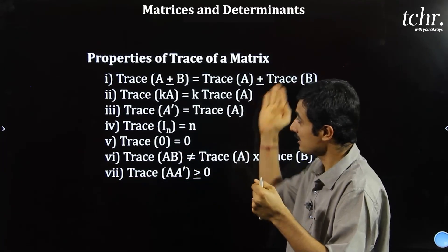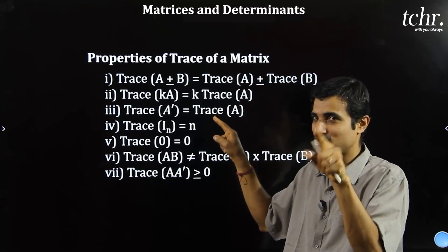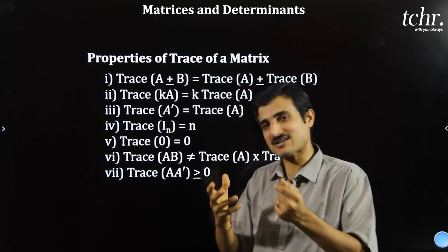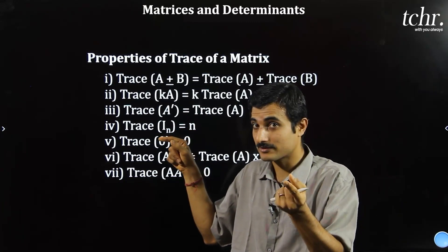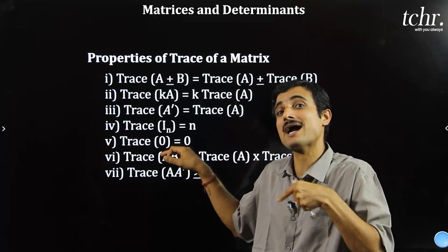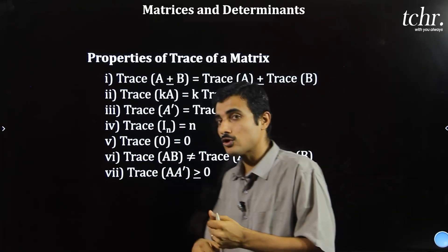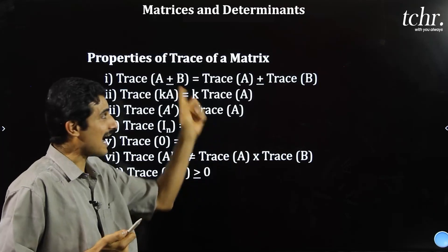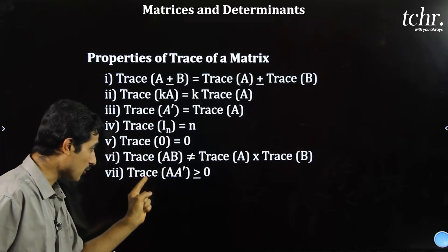Trace of A transpose equals trace of A — diagonal elements don't change. Trace of the identity matrix of nth order equals n, since all diagonal elements are 1 so adding n ones gives n. Trace of zero matrix is 0 since diagonal elements are all 0. Important: trace of AB is not equal to trace of A into trace of B — you cannot split the trace under multiplication. Also, trace of A into A transpose is always greater than or equal to 0.